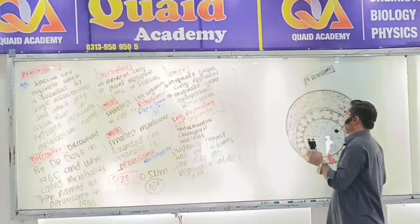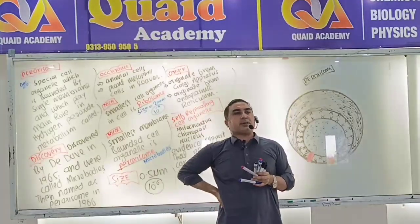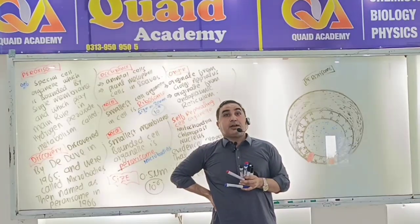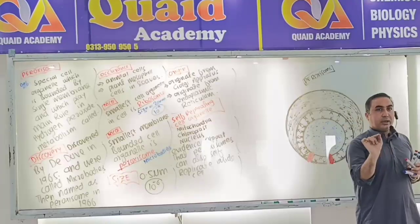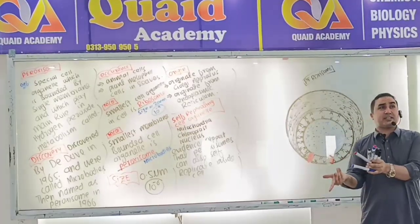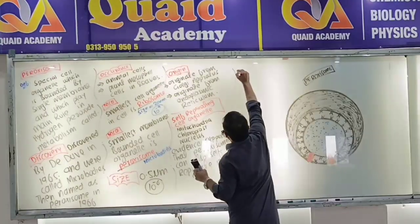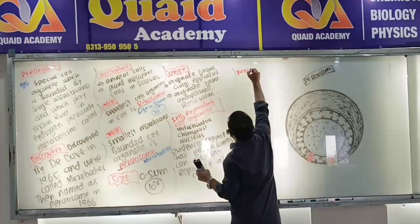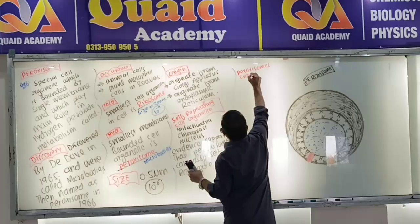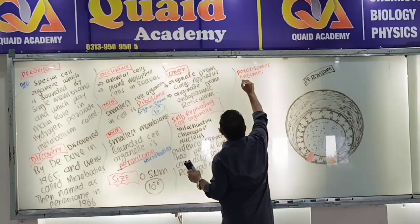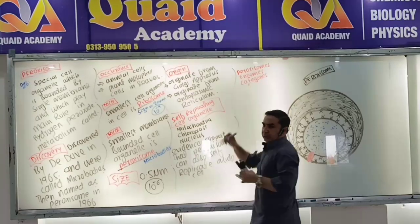Lysosomes contain hydrolysis enzymes. Peroxisomes also contain enzymes, but the enzymes in lysosomes are hydrolytic enzymes — this is a very important MCQ point regarding enzyme categories.